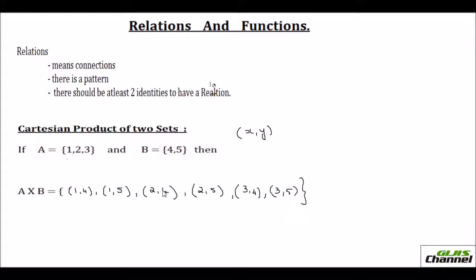Each ordered pair will be written with simple brackets, and all these would be put in a flower bracket — that is why it is called a set. Normally we write the set within flower brackets, and simple brackets are used to represent the ordered pairs. So this is A cross B. The Cartesian product has 1, 2, 3, 4, 5, 6 ordered pairs.